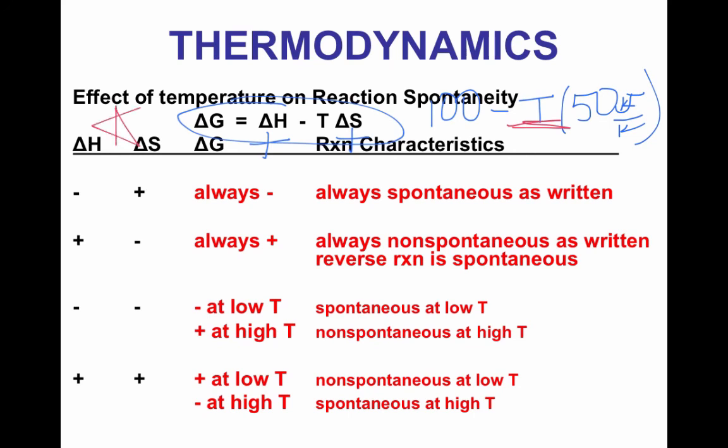This table does a very good job of summarizing these scenarios. When delta H is negative and delta S is positive — exothermic and increasing disorder — it's always spontaneous. That's the best scenario. It's always non-spontaneous when it's endothermic and you are increasing order — that's opposite to what the universe wants. When they have the same sign, you really need to focus on the equation and problem-solve. Pay close attention to the negative sign: if you're subtracting a negative, it ends up becoming positive.